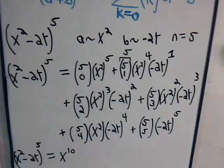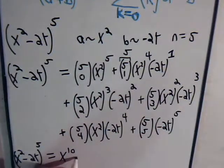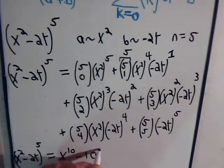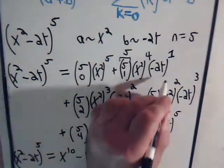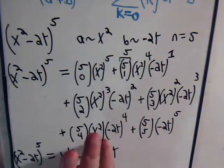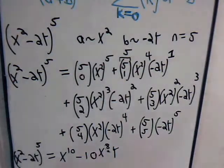Now here we have, from this term, minus 2. So that's going to give us minus 10 times x to the eighth times y. Let's write this a little bit neater. Okay.